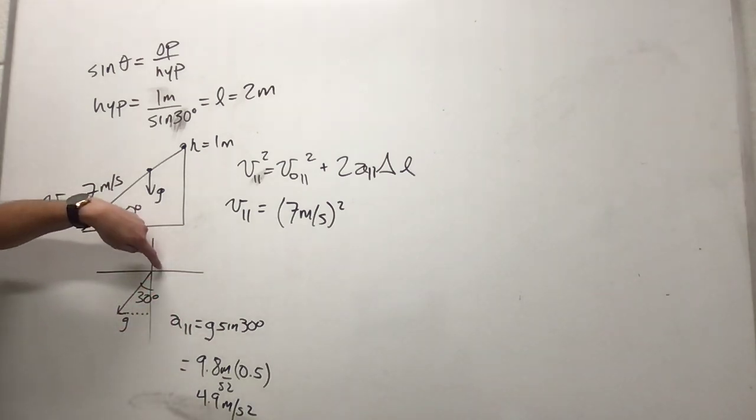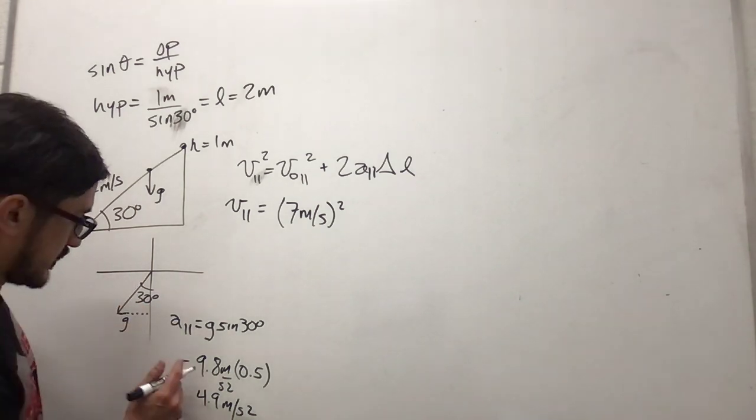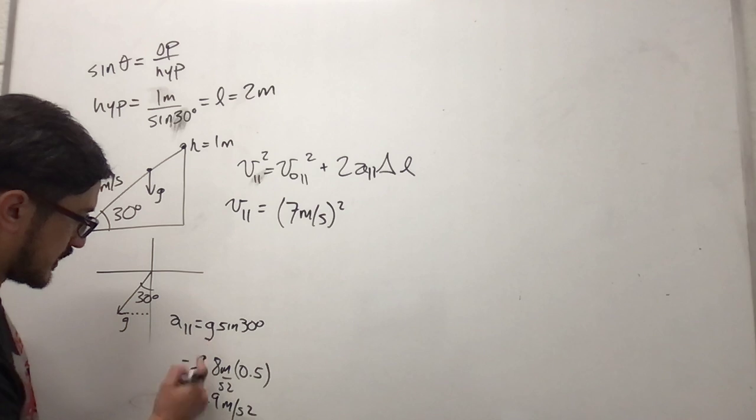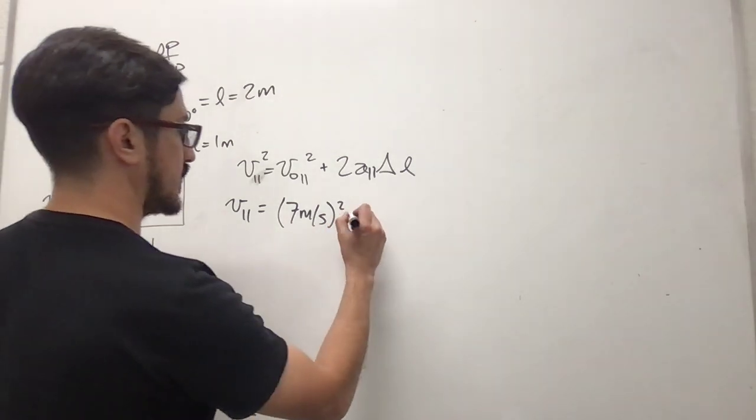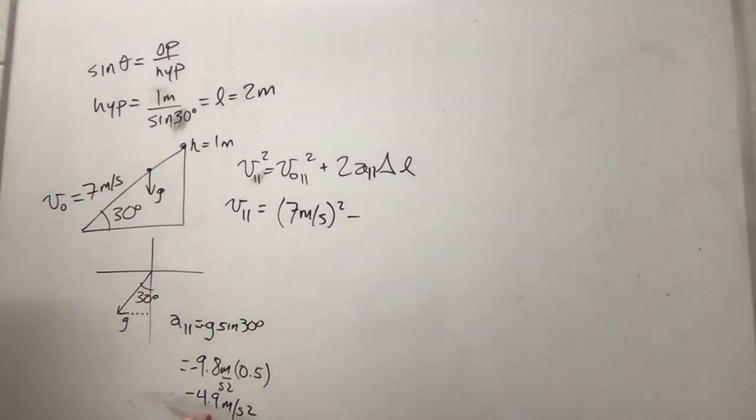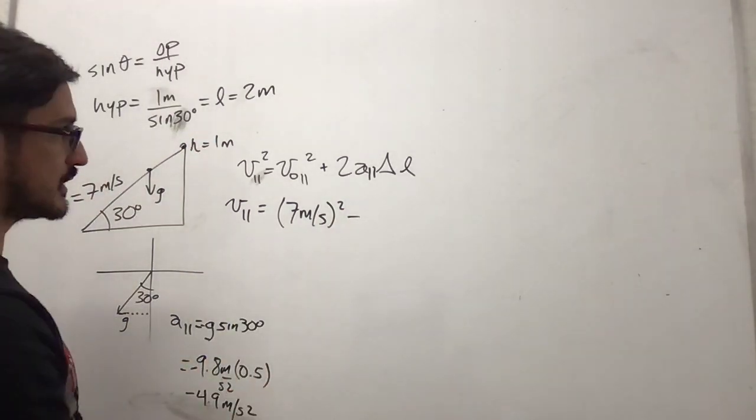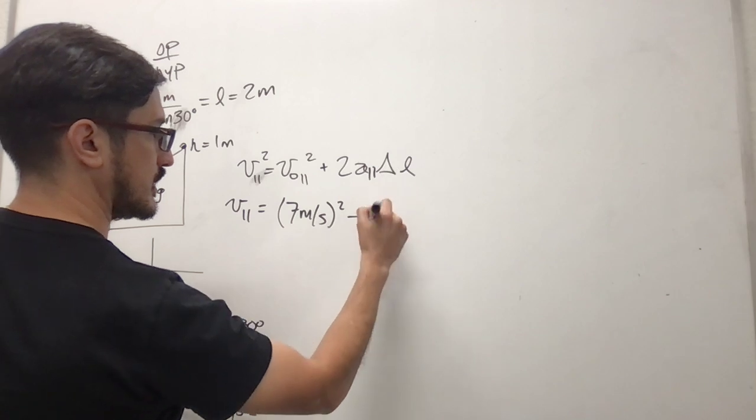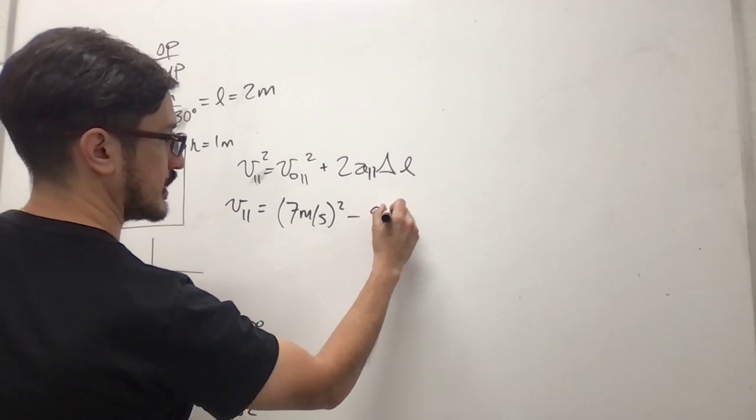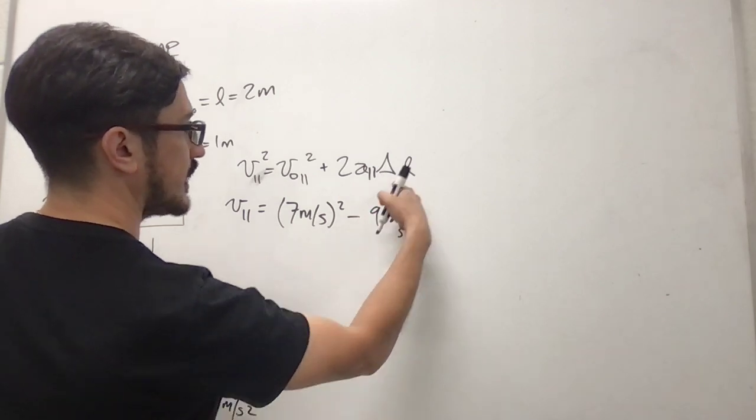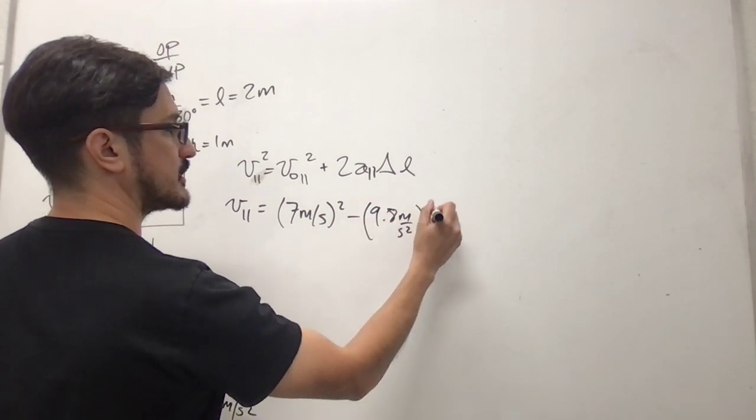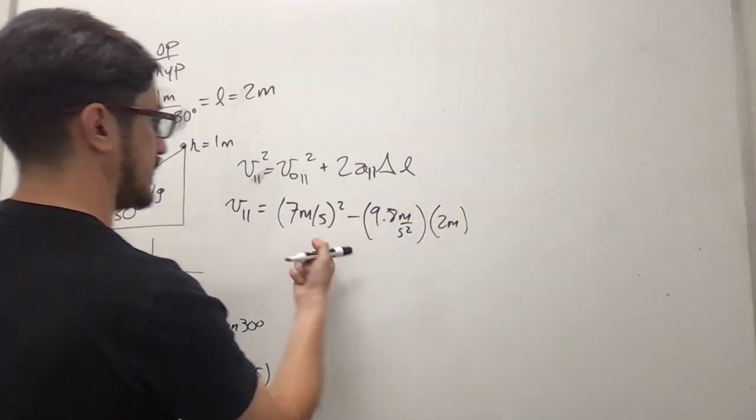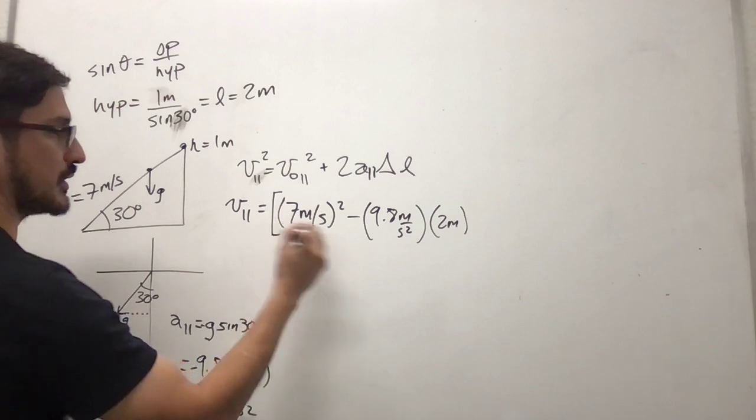4.9 meters per second squared. So this is negative. So this is negative. 2 times 4.9 is 9.8 again. And then times 2, which is the length. And so we want the square root of this.